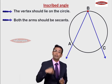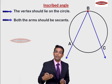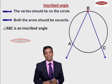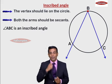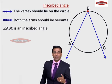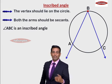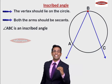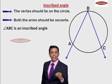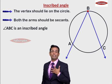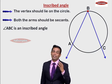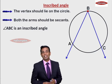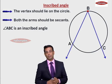Angle ABC is satisfying both conditions. So angle ABC is called an inscribed angle. Did you understand what we mean by an inscribed angle? Condition number one: vertex on the circle. Condition number two: both the arms are secant. Such an angle, we call it an inscribed angle. Right now in the figure, we have angle ABC which is an inscribed angle.